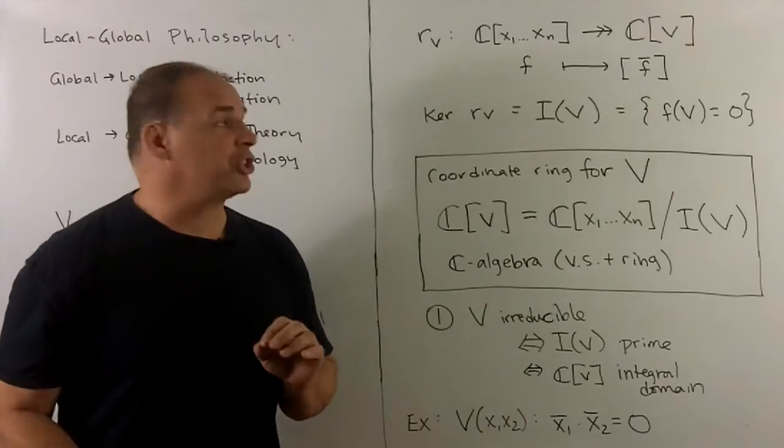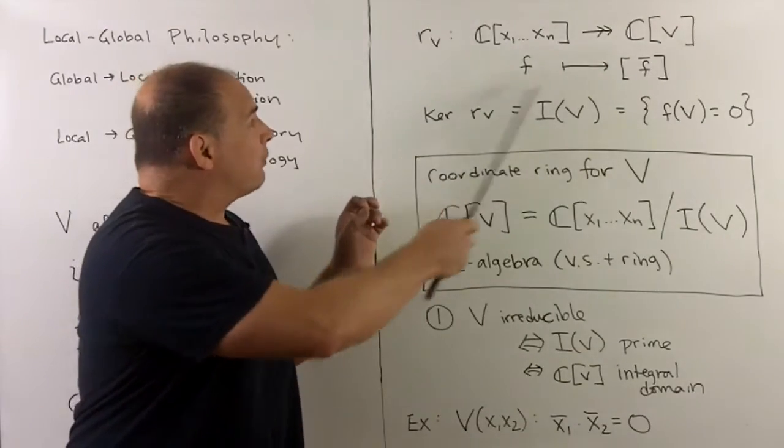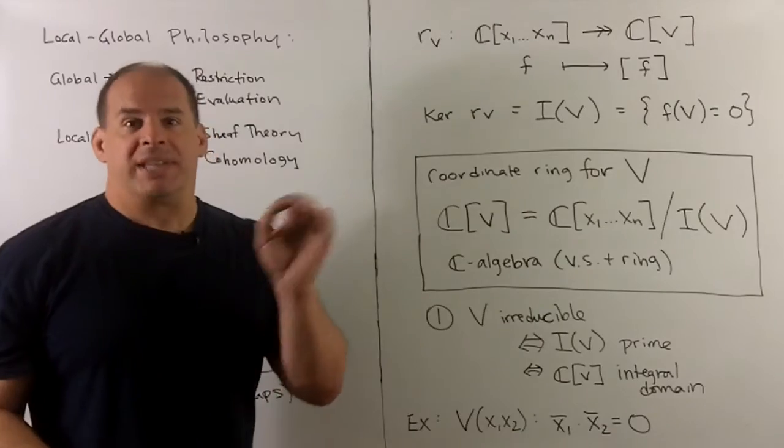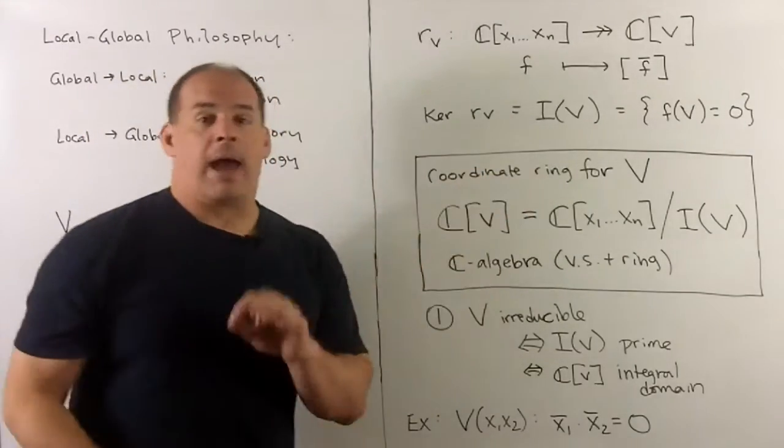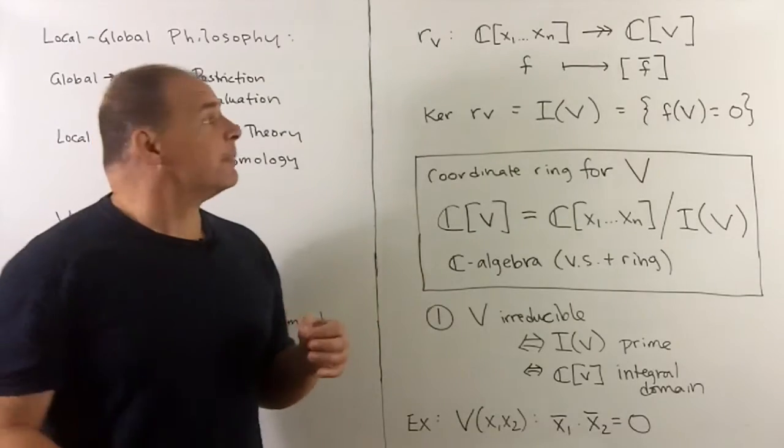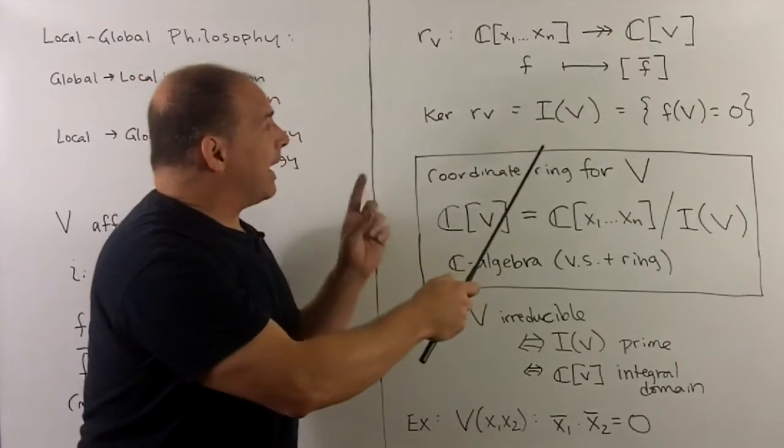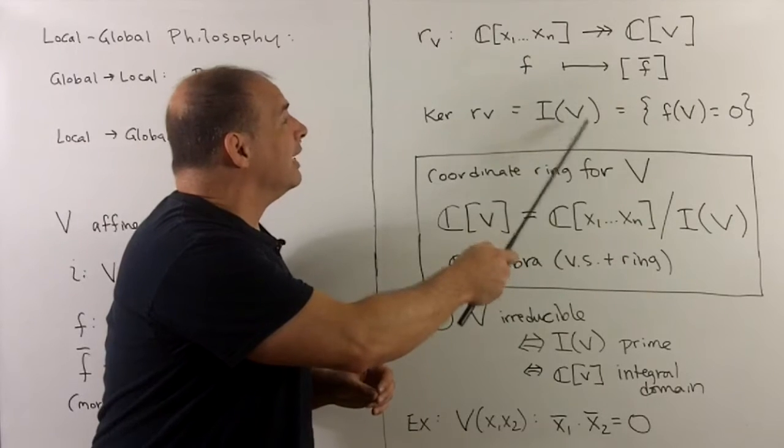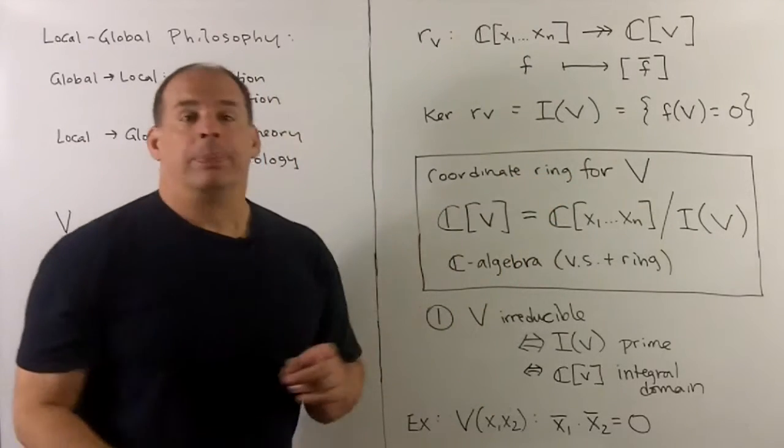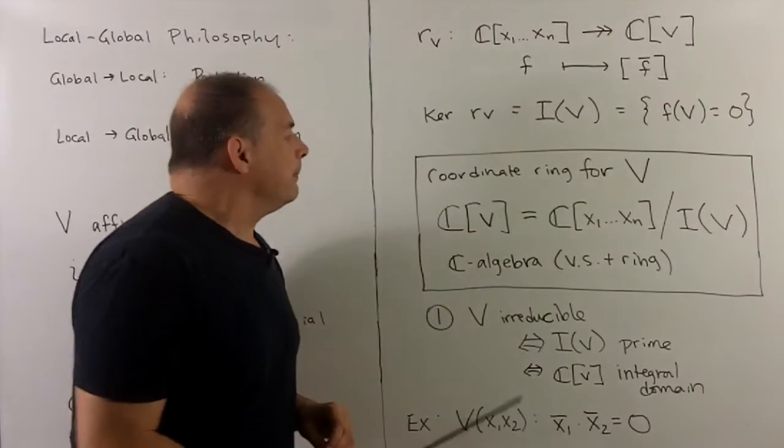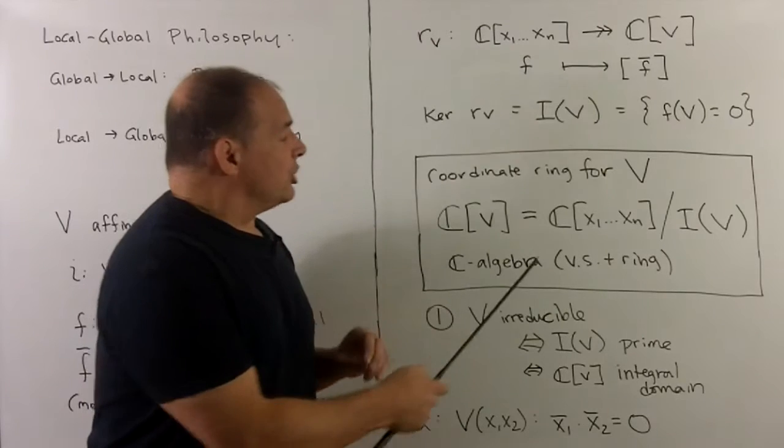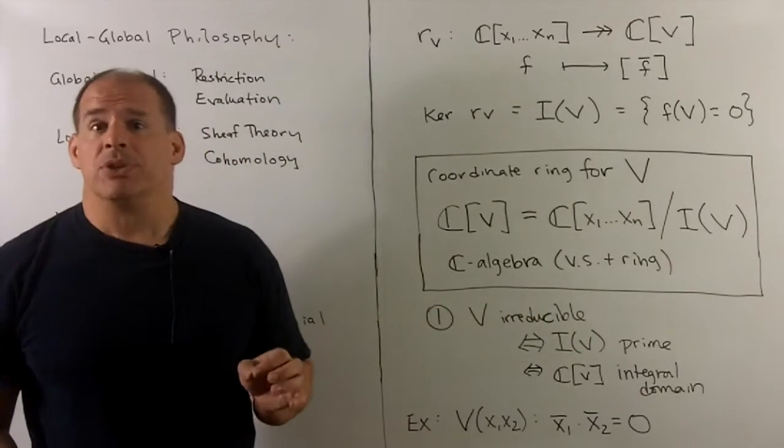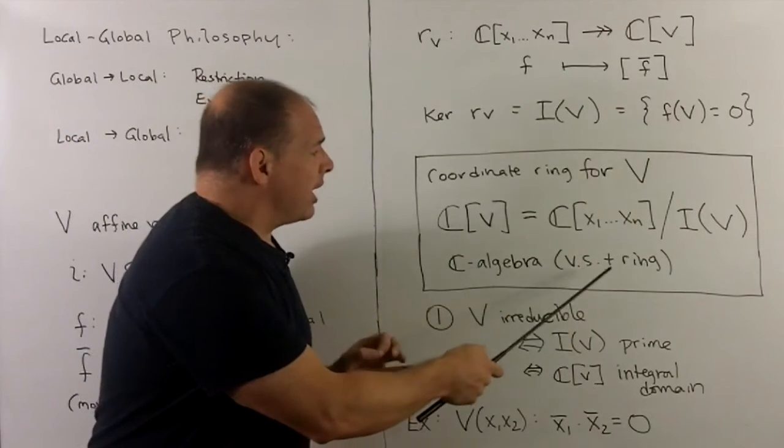Now, what we're doing here is essentially restriction. So I'm just going to take a map from polynomials into what we call the coordinate ring for V. Now, once I've restricted to V, what's happening? Well, this map, it's a map of vector spaces, actually C-algebras, and we know the kernel of this map is going to be anything where restriction to V goes to zero. So that's going to be precisely the ideal for V. Now since this is a surjective map, that means, take this as a definition of the coordinate ring for V. The coordinate ring for V, which I write as C bracket V, is just the polynomial ring on C^N modded out by the ideal for V. So this is going to be a C-algebra. So it's going to have a vector space structure and a ring structure.